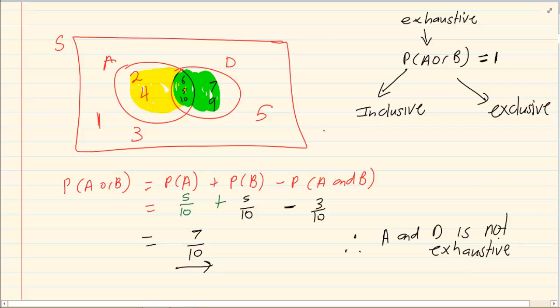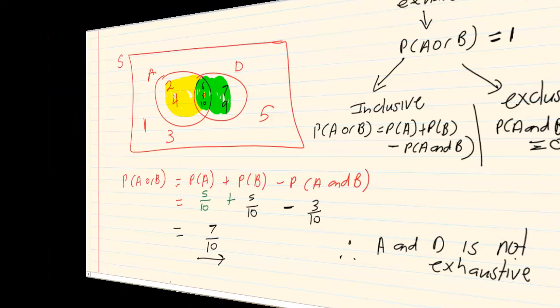Now for inclusive, you know the formula. For exclusive, what you need to prove is that P of A and B is equal to 0. Thank you for watching.